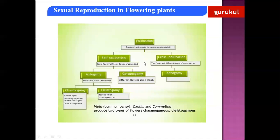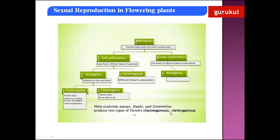Summary of pollination: two types — self-pollination and cross-pollination. Self-pollination includes autogamy and geitonogamy. Cross-pollination is xenogamy. For autogamy there are two devices: chasmogamy (flowers that open) and cleistogamy (flowers that do not open). Examples of plants producing both chasmogamous and cleistogamous flowers: Oxalis, Commelina, and Viola, commonly called pansy.